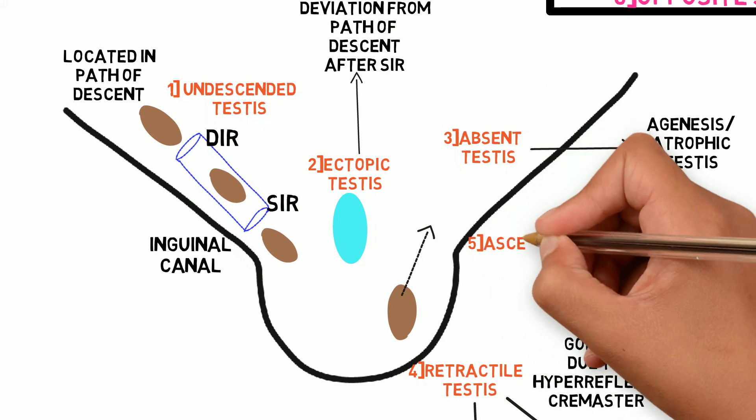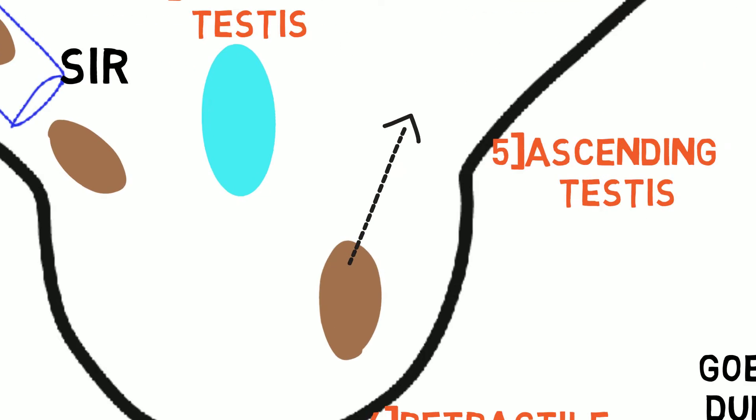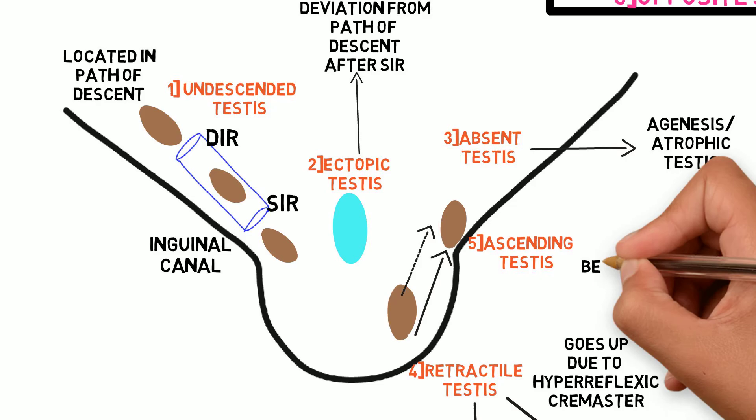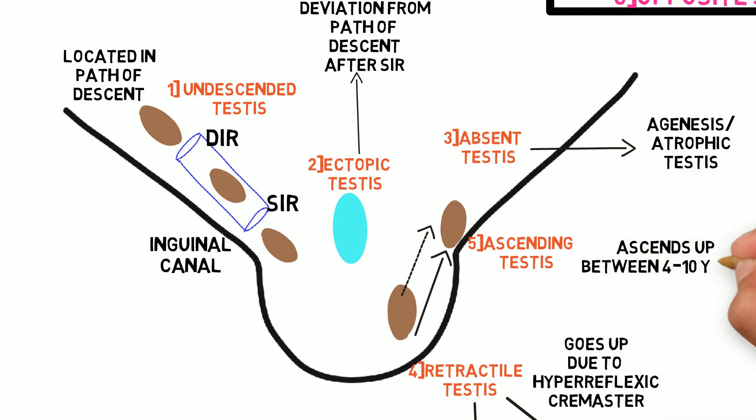Fifth cause is ascending testis. Here the testis is in the scrotum but ascends up later to low inguinal position between 4 to 10 years of age and remains there.